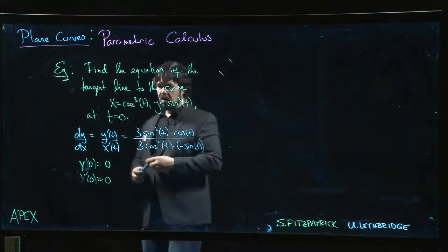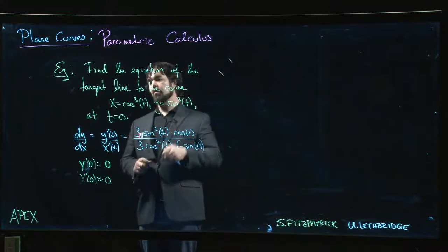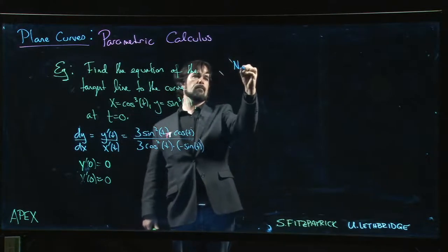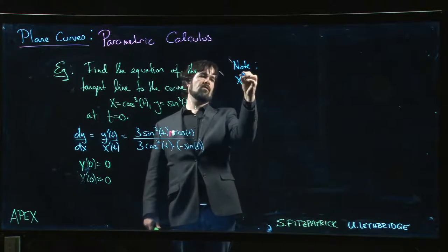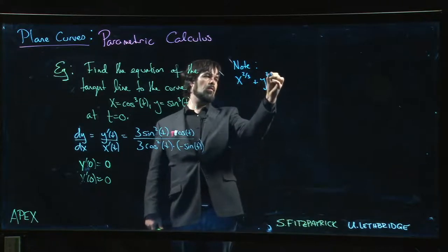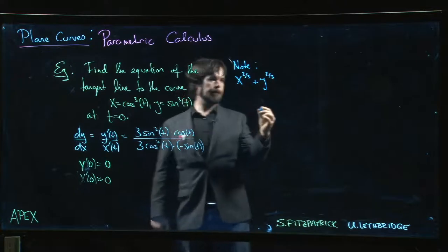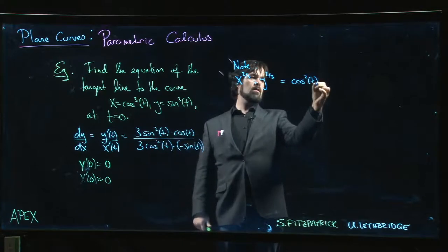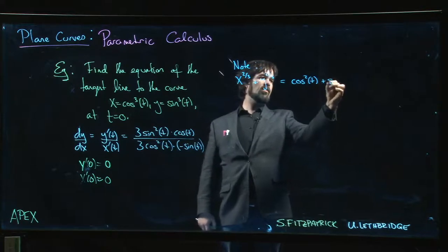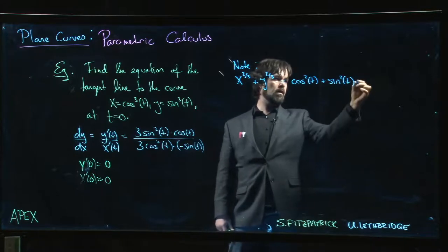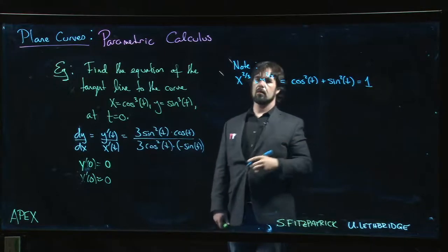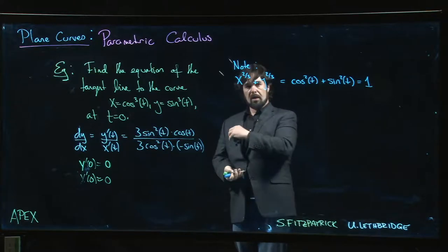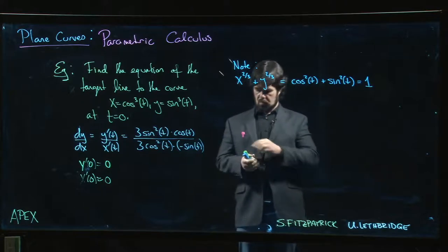Actually, think about it for a second—we actually know what this curve is. If we eliminate the parameter, we might notice something. Notice that if I do x to the two-thirds plus y to the two-thirds, cosine cubed to the two-thirds gives me cosine squared, sine cubed to the two-thirds gives me sine squared. Sine squared plus cosine squared is one.